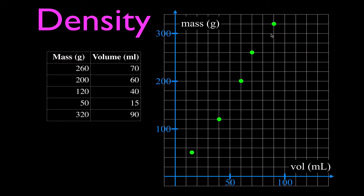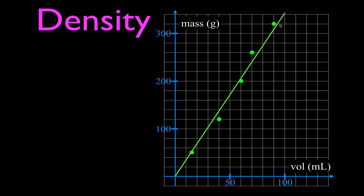You'll notice the points pretty much fall in a nice straight line because it's a proportional relationship for density. I can draw what I'd consider my best fit line. Not all the points may line up on the best fit line, but I draw one line that's like the average of my data. It's going to go through the origin, because when I have no mass I have no volume — that's like another data point. Now we're going to calculate the slope of that line, because the slope of that line, which we give the symbol m, is equal to the density.